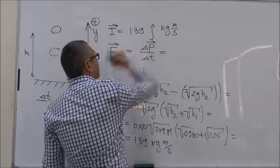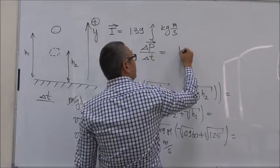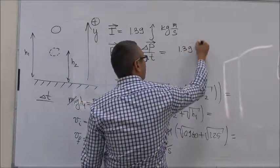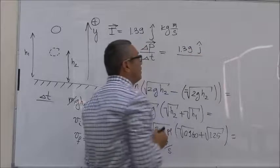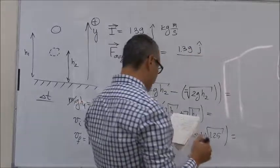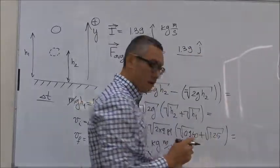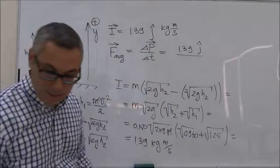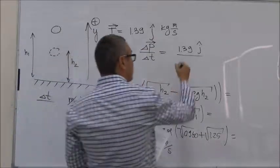Delta P is the same as impulse, so that's 1.39 unit vector J, over the time instant, which is given to be 0.1 second.